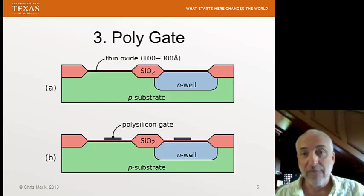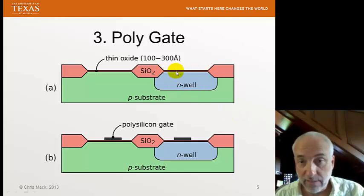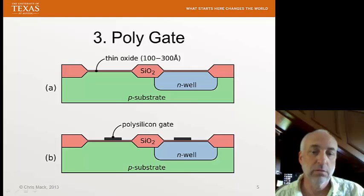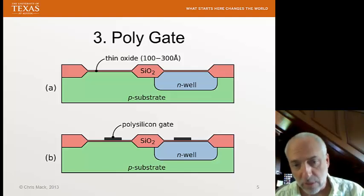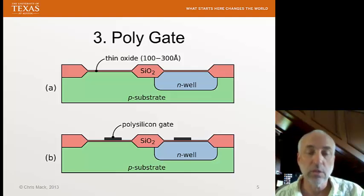For polygate formation, we first grow or deposit a thin oxide over our active areas, then deposit polysilicon and pattern it into the polysilicon gate. This gate region will be the gate of our MOS transistor. Notice that we have one on each side — over the N-well we're going to form a P-channel device, and over the substrate, which could be a P-well, we're going to form an N-channel device.